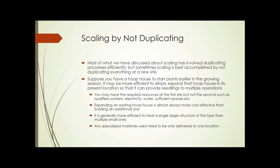This slide is called Scaling by Not Duplicating. Most of what we've discussed about scaling has involved duplicating processes efficiently. But sometimes scaling is best accomplished by not duplicating everything at a new site. For example, you may have a hoop house to start plants earlier in the growing season. It may be more efficient to simply expand that hoop house at its present location to provide seedlings to multiple operations than to build hoop houses at each remote location.